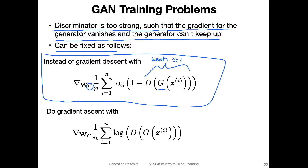These are the generated images, and the generator wants the discriminator to think they are real. If the discriminator outputs something close to one, then log(1 − 1) will be minus infinity. We minimize this loss function — it is maximized when the output is close to zero, since log(1 − 0) = 0. What we want is something close to one, but in the beginning the discriminator output is close to zero.